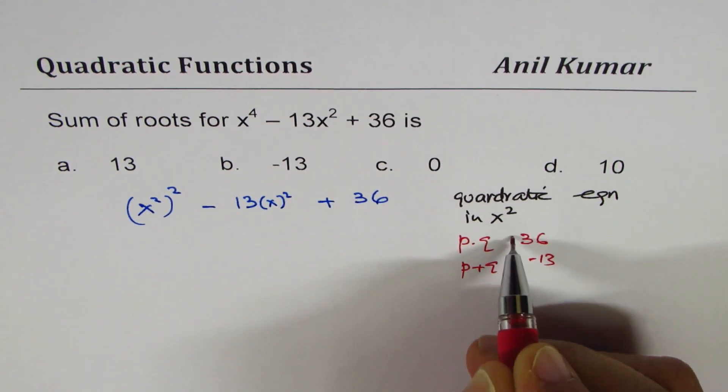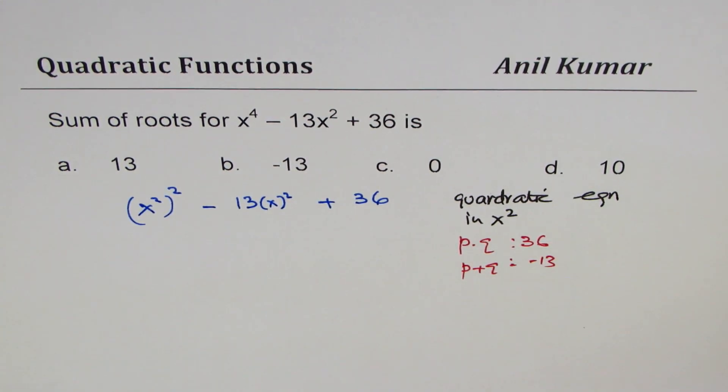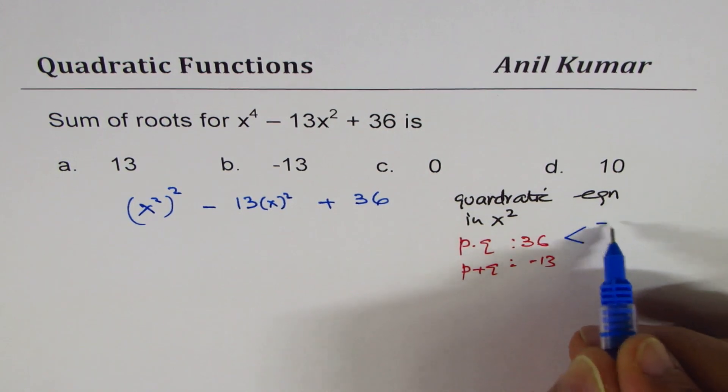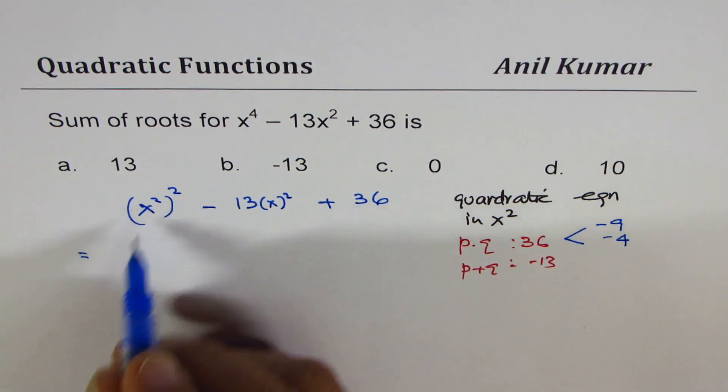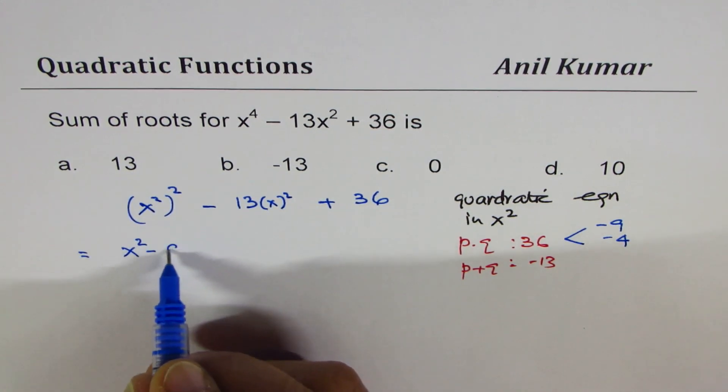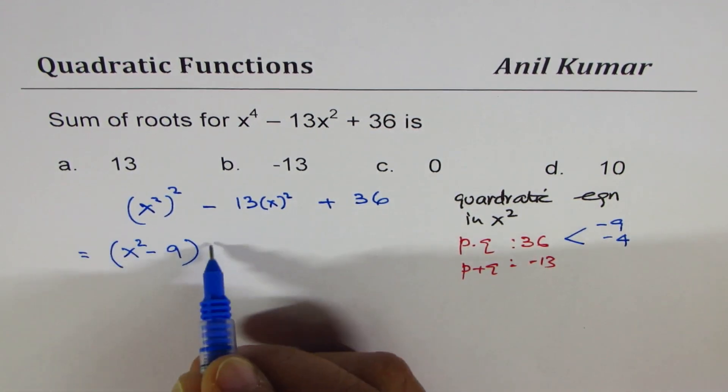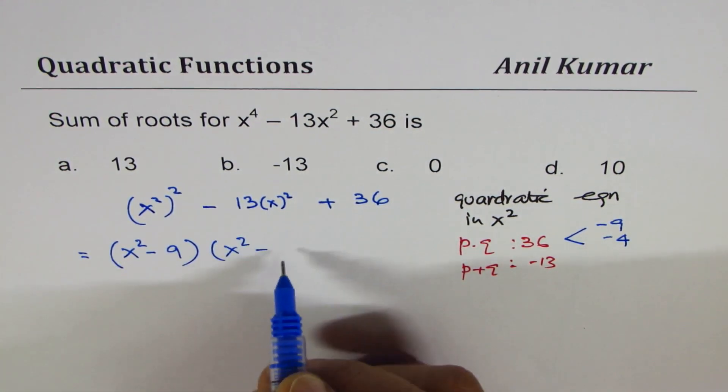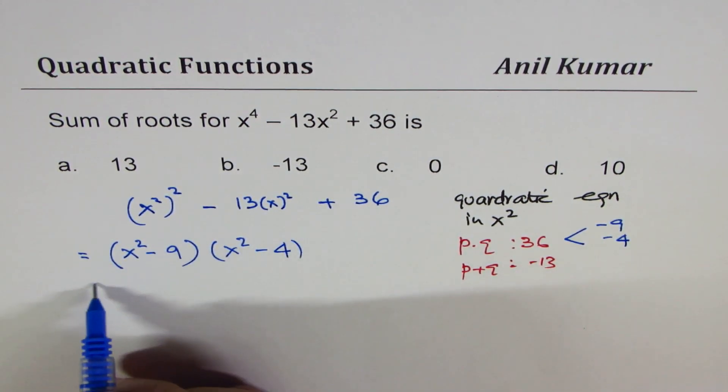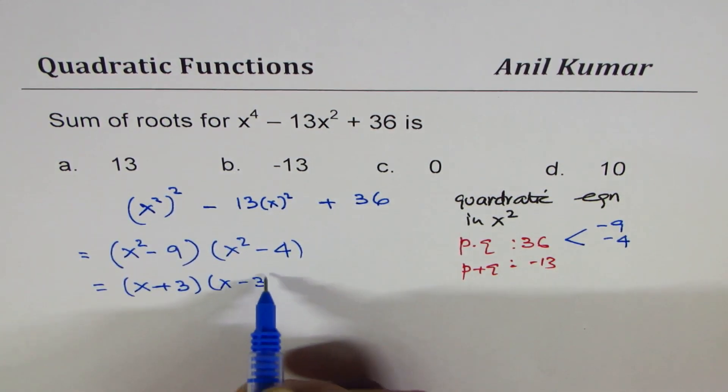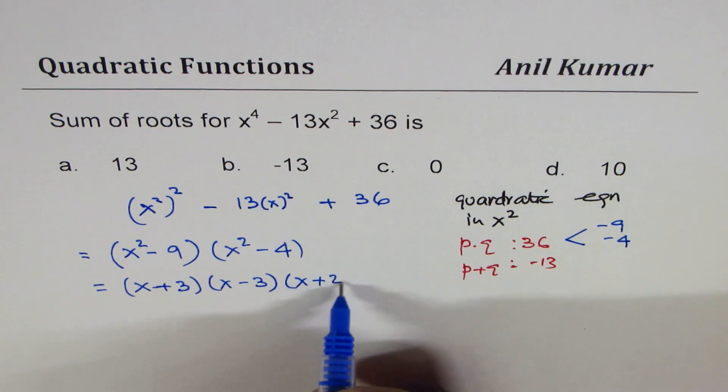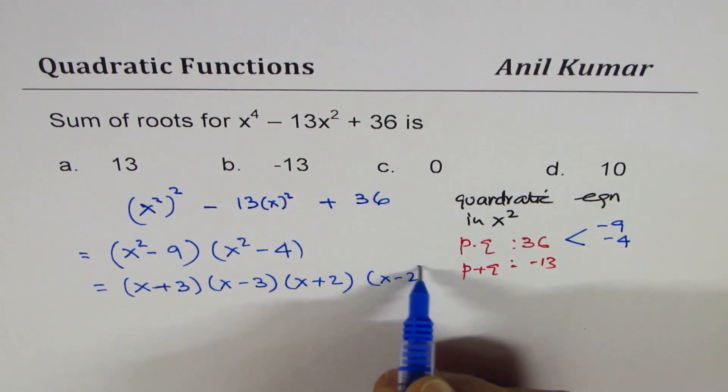Let me write minus 13. Okay. So the two numbers are minus 9 and minus 4. So we could now factor this x squared minus 9 times x squared minus 4. Right. This can be further factored. So we get x plus 3 times x minus 3 times x plus 2 times x minus 2.